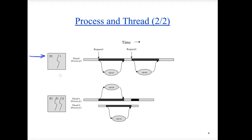However, if process P1 could have two threads T1 and T2, T1 could process the first request and send it to the server whenever it is created. Therefore the waiting times for getting responses from the server could overlap, creating less execution time and much faster, higher throughput. This is the benefit of threads and multi-threading, which is explained in detail in operating system courses.